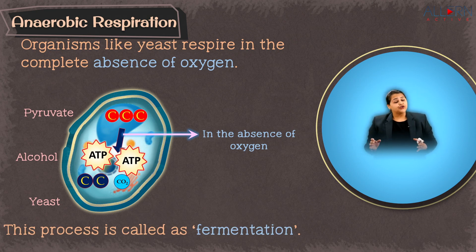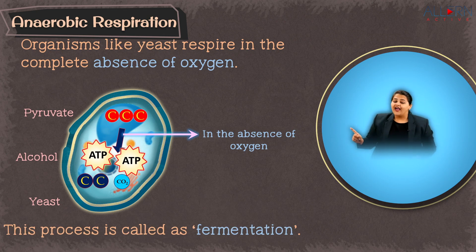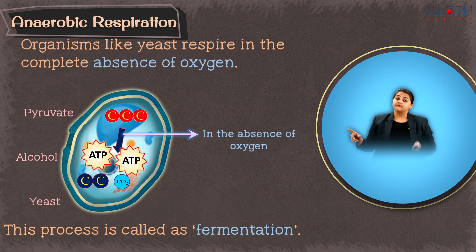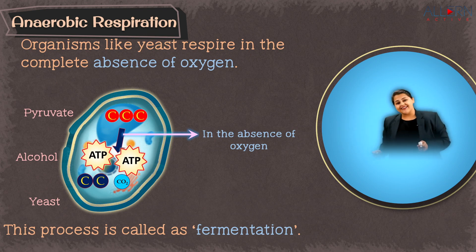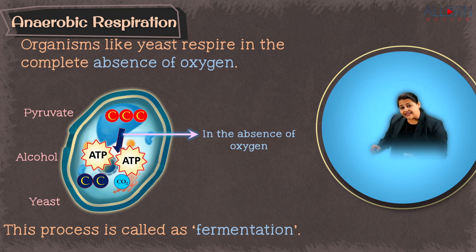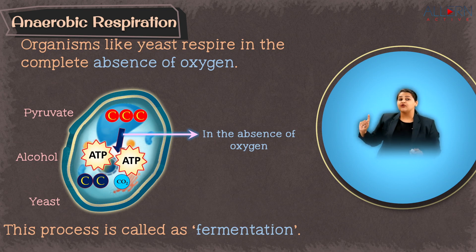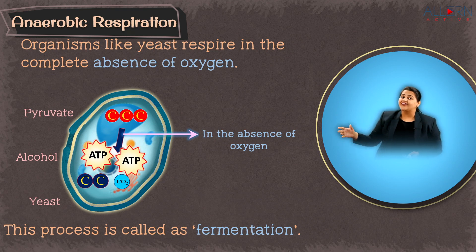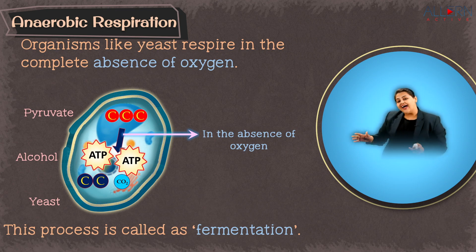In fermentation, glucose is broken down in the absence of oxygen into alcohol and carbon dioxide, producing less amounts of energy. This anaerobic respiration is utilized to make alcohol, wines, and breads. All of these procedures rely on the process that yeast performs — fermentation — where pyruvate undergoes fermentation to produce alcohol and carbon dioxide with less energy.